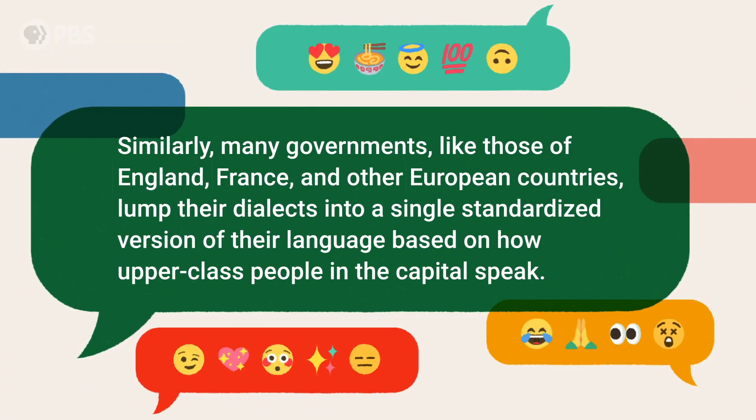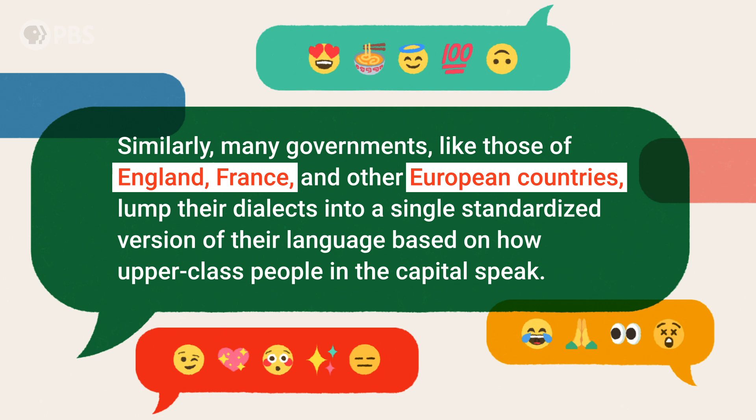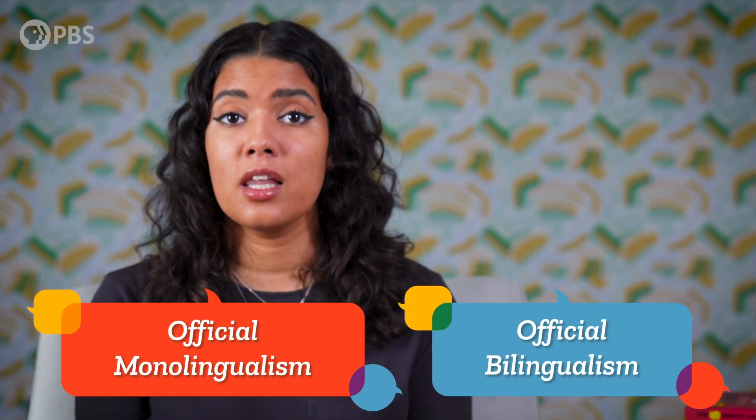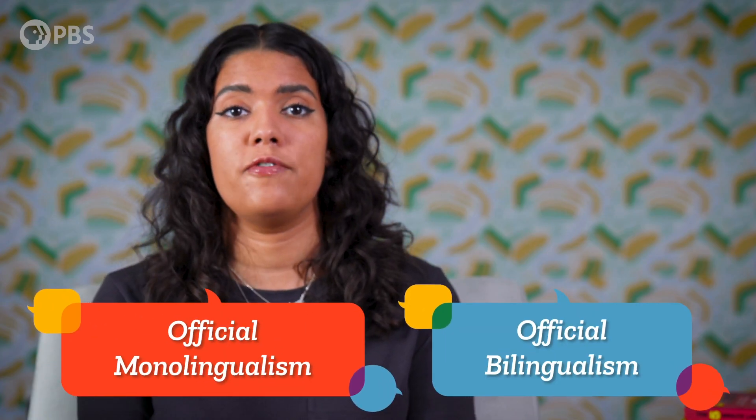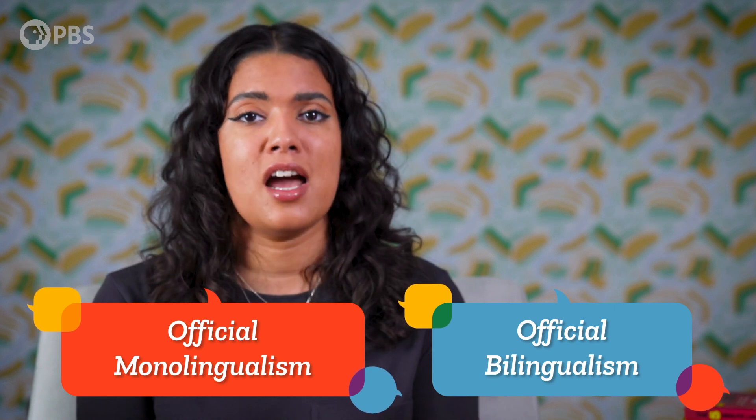While sometimes politics splits languages apart, other times it lumps them together. It's standard to label the seven language groups of China as dialects of Chinese rather than languages, but those language groups diverged at least a millennium ago and many aren't mutually intelligible. Part of the reason for debate is that they share the same writing system — basically the opposite of what's happened with Hindi and Urdu. Similarly, many governments like those of England, France, and other European countries lump their dialects into a single standardized version based on how upper-class people in the capital speak. They establish official monolingualism, bilingualism, or other limited numbers of state-sanctioned official languages to create the image of a unified national identity.